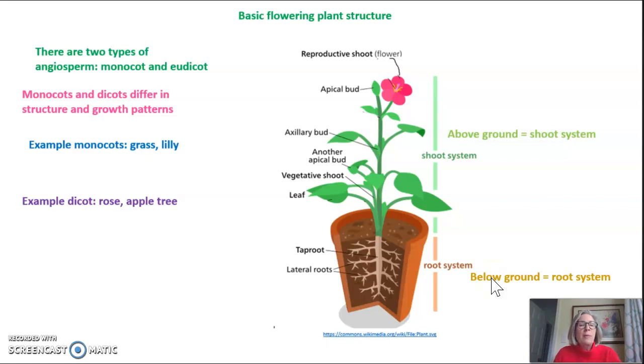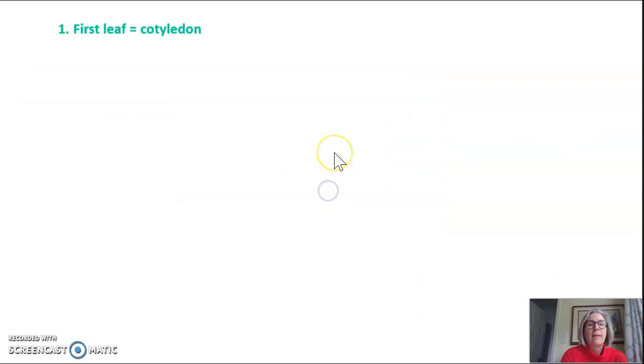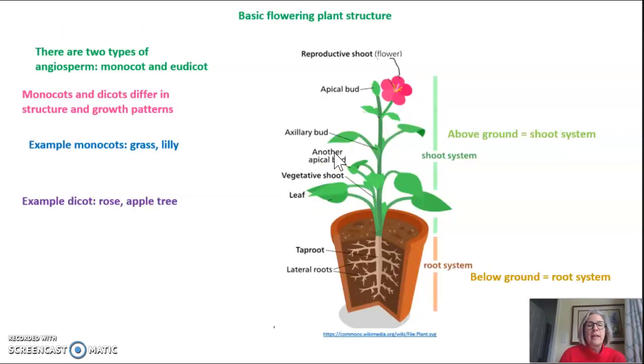When I'm talking about the differences in structures between monocots and dicots we are going to see that there are differences in the leaves, that there are differences in the root system, there are differences in the flower structure, and there's also differences in the vascular structure and the first leaves that are produced by the plant when it's initially germinating. So let's go through each of these differences.